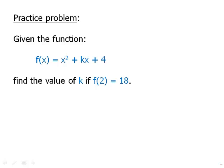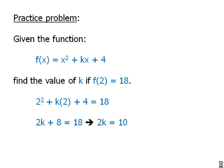So pause the video and then we'll talk about this. Okay. So when we plug 2 into that expression, we know that that expression equals 18. So we plug it in. We simplify a bit. We get the 2 squared plus 4, that's 8. Subtract 8 from both sides. So 2k equals 10 divided by 2. We get k equals 5. So all we did really was plug in the value of 2 and set it equal to 18 and then solve for k.